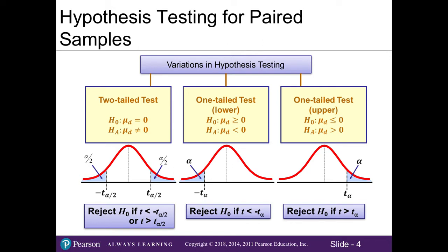When you see the little d, you know you're working with paired samples. Because we're only working with one population, that's why you only see one mu. But what we're testing for is whether there is a difference within that population by looking at paired samples — the same sample twice for their before and after results.